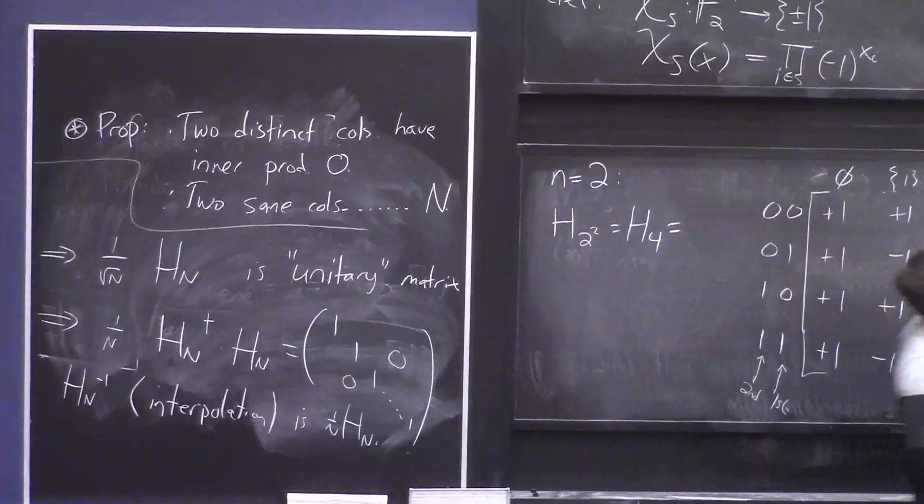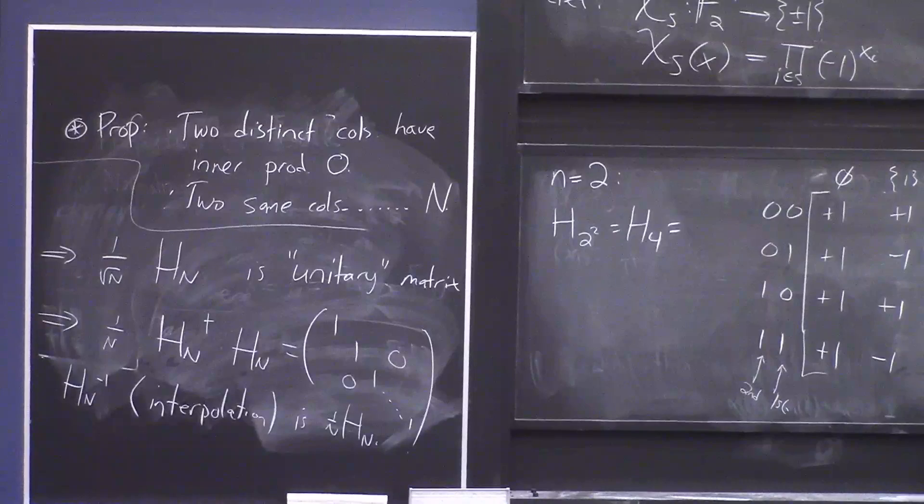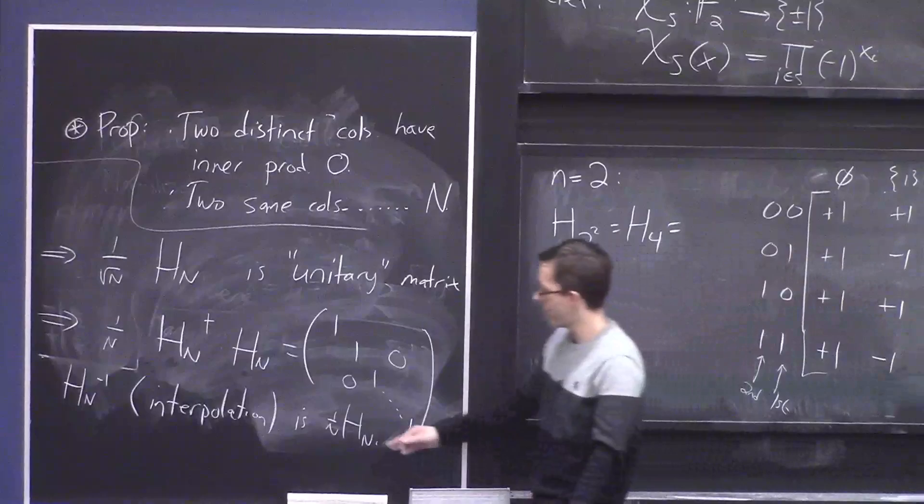This is the matrix you use when you have the truth table of a Boolean function — the 2^n values listed in a vector — and you want to get the Fourier coefficients out. You just multiply by H_N and divide by N. The fact that the inverse matrix is (1/N)·H_N is the interpolation formula.